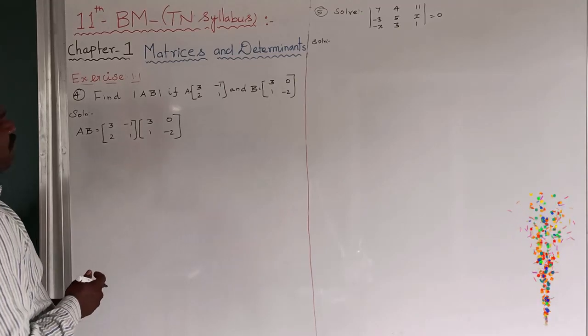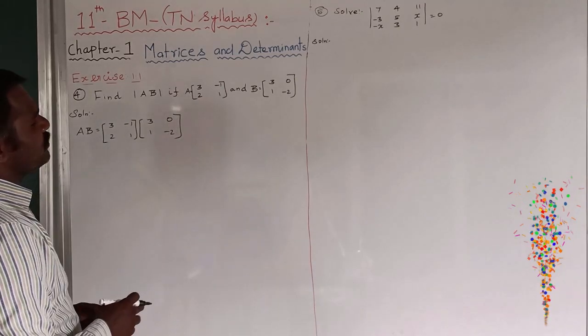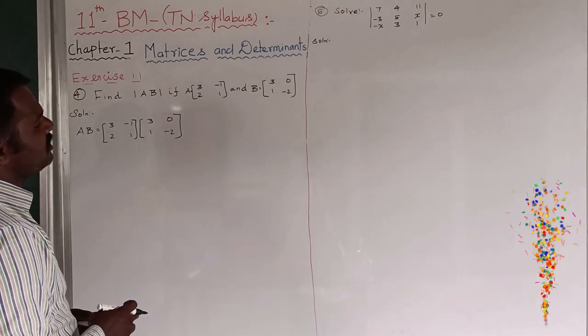So, fourth question, find the modulus of AB. If A is equal to the matrix 3 minus 1, 2, 1 and B is equal to 3, 0, 1, minus 2.